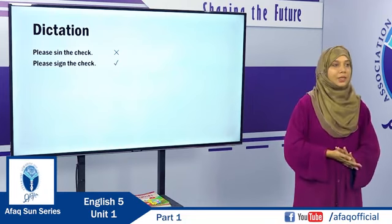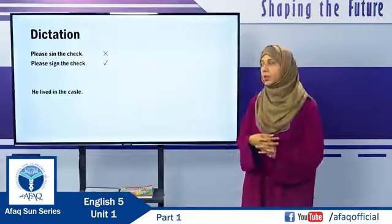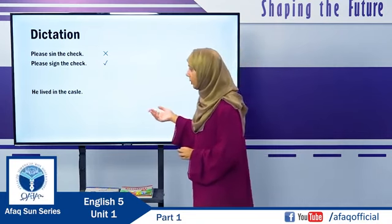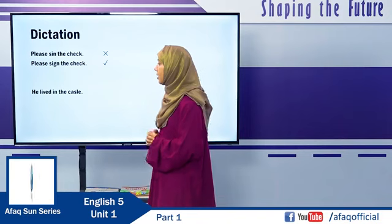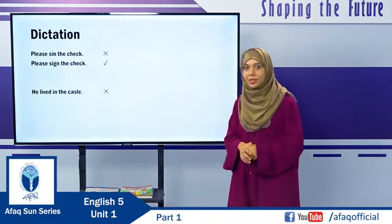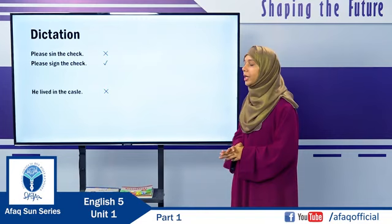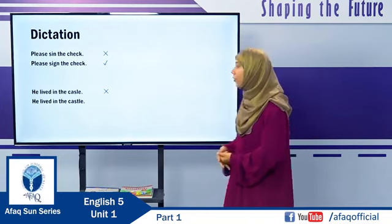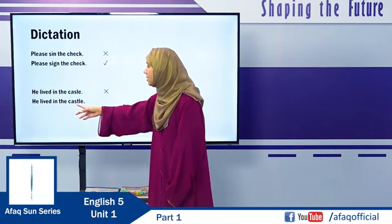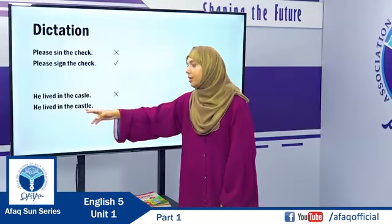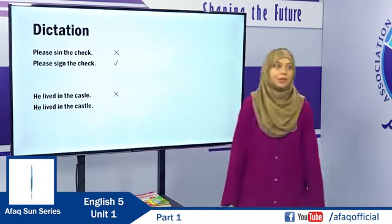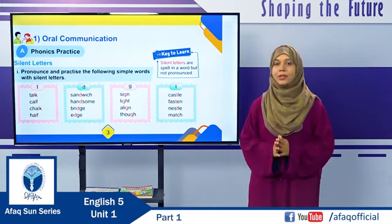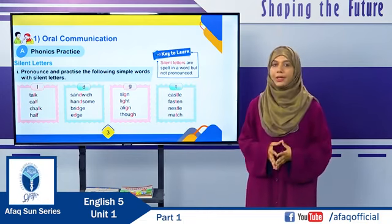The next sentence is: He lived in the castle. Is this sentence correct? No — in this sentence, the word 'castle' is not spelled correctly. The correct spelling of 'castle' is C-A-S-T-L-E, because T is silent in this word. So this is the correct sentence. In today's lesson, we will learn more about silent letters.